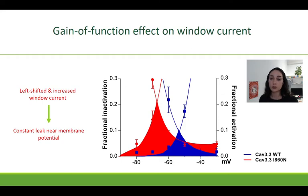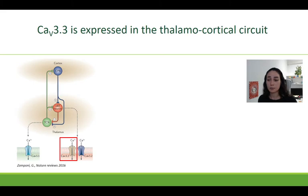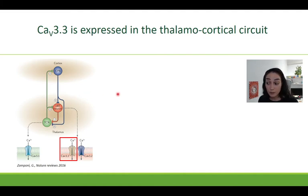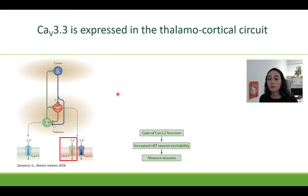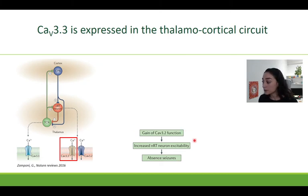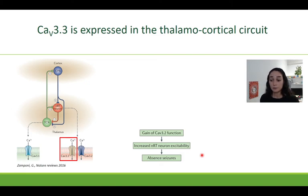Increased leak current can also result in hyperexcitability, which could explain the seizures that we see in epilepsy patients. Cav3.3 is expressed in NRT neurons in the thalamocortical network, and an imbalance of thalamocortical rhythms has been associated with epilepsy. Several gain-of-function mutations in Cav3.2, also expressed in NRT neurons, are linked to epilepsy and were shown to increase NRT neuron excitability, which then results in an imbalance in the excitatory-inhibitory balance and ultimately leads to seizures.